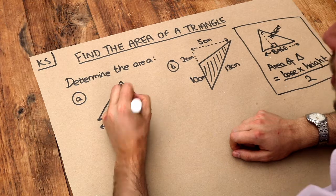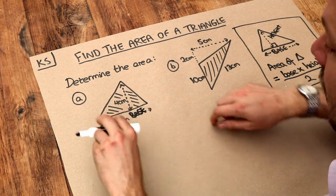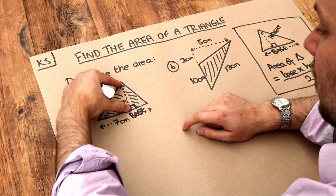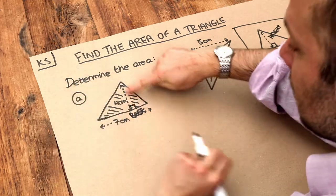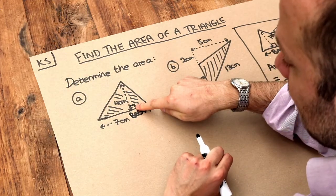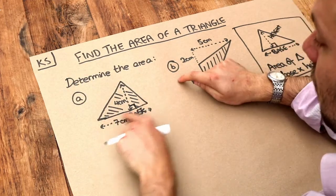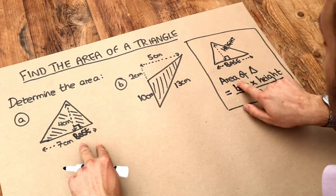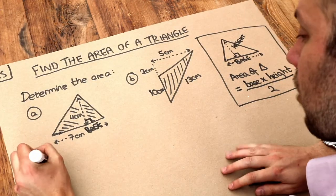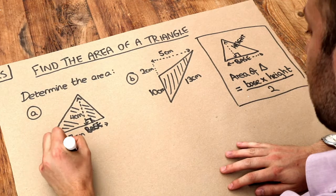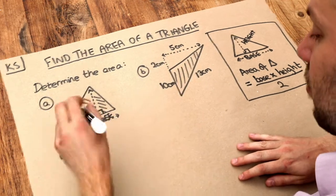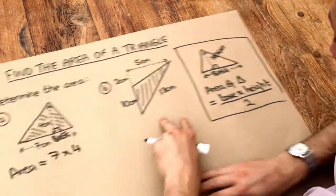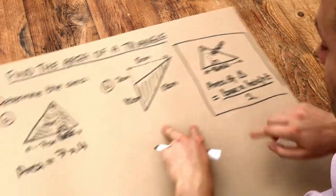So this 7 centimetres is going to be the base, and then our height has to be perpendicular to it. And that height we can see is indeed perpendicular, because there's a right angle there, to the base. So we can just use this formula. The area of the triangle is equal to the base, which is 7, times by the height, which is 4, and then we divide it by 2.